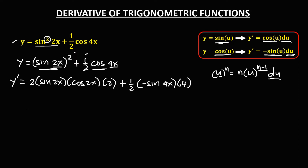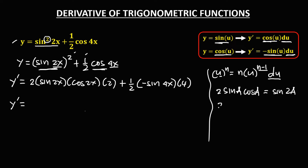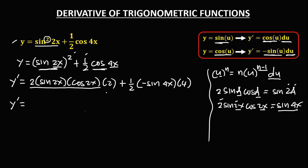Now we simplify using trigonometric identities. From the double angle identity, 2 sine a cosine a equals sine 2a. So we have 2 sine 2x cosine 2x, where a equals 2x, and therefore 2 times 2x gives 4x. So 2 sine 2x cosine 2x equals sine 4x.